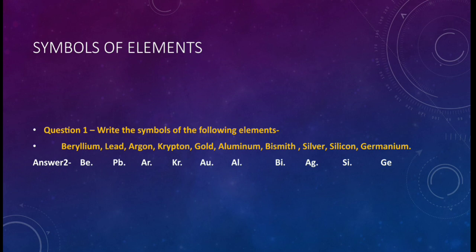So the first element over here is beryllium. The symbol for beryllium is Be. Lead, symbol is Pb. Argon, symbol is Ar. Krypton, symbol is Kr. Gold, symbol is Au. Aluminum, symbol is Al. Bismuth, symbol is Bi. Silver, symbol is Ag. Silicon, symbol is Si. Germanium, symbol is Ge. So these are some of the common elements which I have given over here. But you need to learn as many as you can.